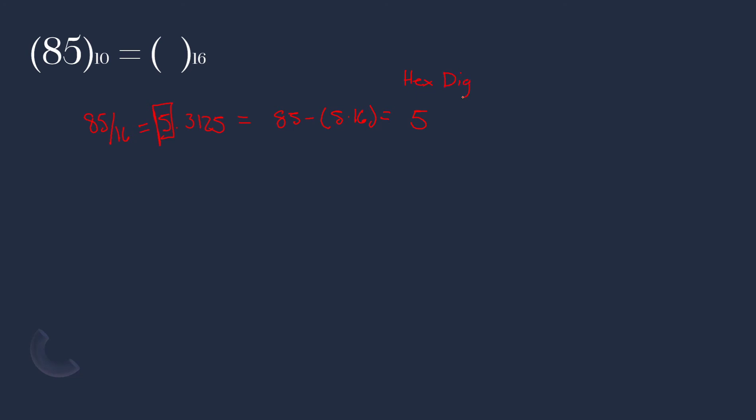Or remainder, whichever one you want to call. Now we are left with 5 because of this one right over here. So this one and this 5 are completely separate. They are not the same. So 5 divides 16. 16 doesn't go into 5 at all. So it's a big fat 0. And we are left with the remainder on the top. So 55. You read it upwards. Since they're both the same number, reading it, it's going to be the same thing. So 85 base 10 equals 55 base 16.